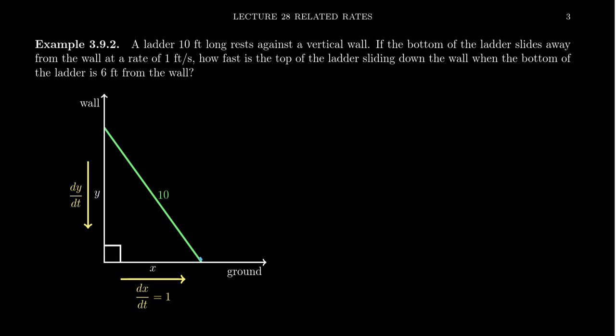We have some ladder resting against the wall. Maybe someone's taking down their Christmas decorations. Imagine that the bottom of the ladder is actually slipping away — when you're taking down those Christmas lights, maybe there's some snow in January, so it's starting to slip away from the wall.